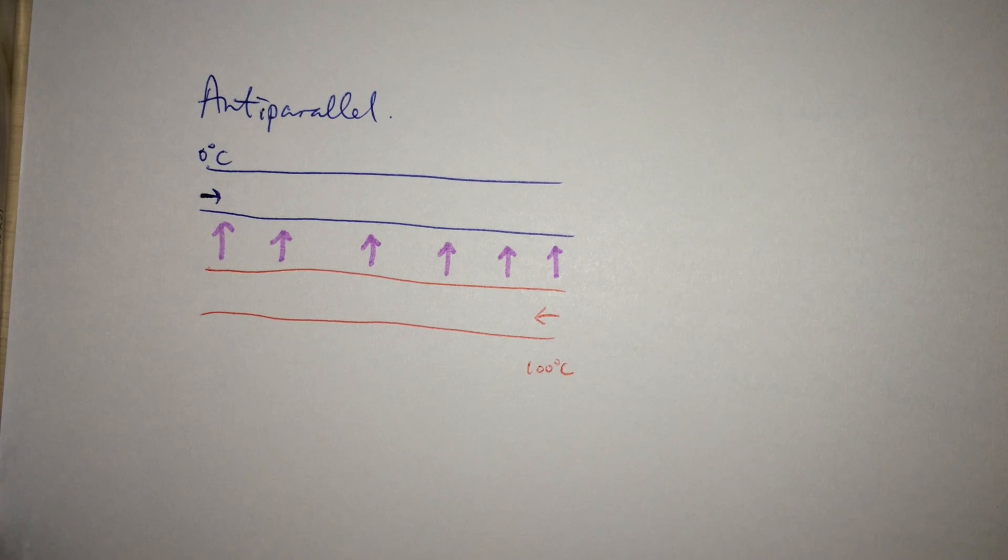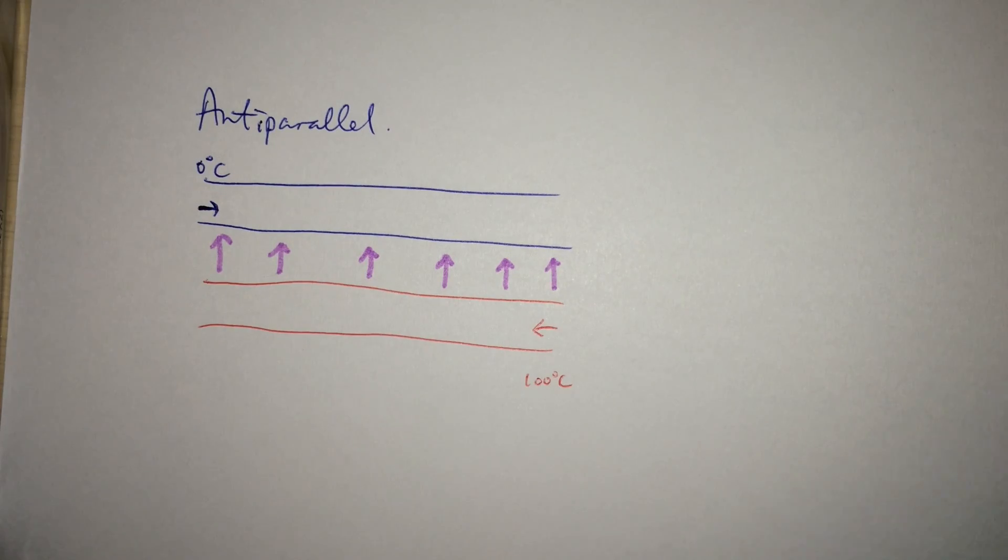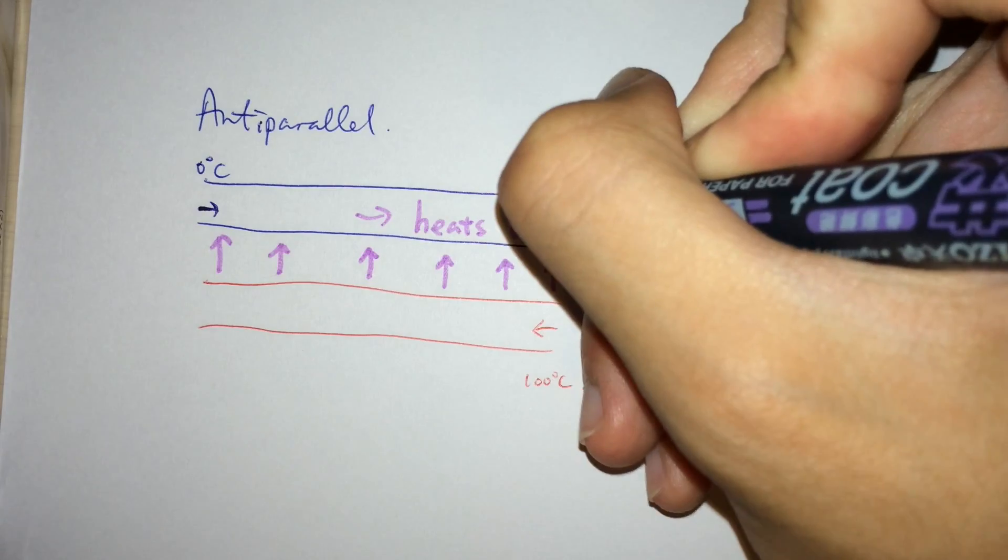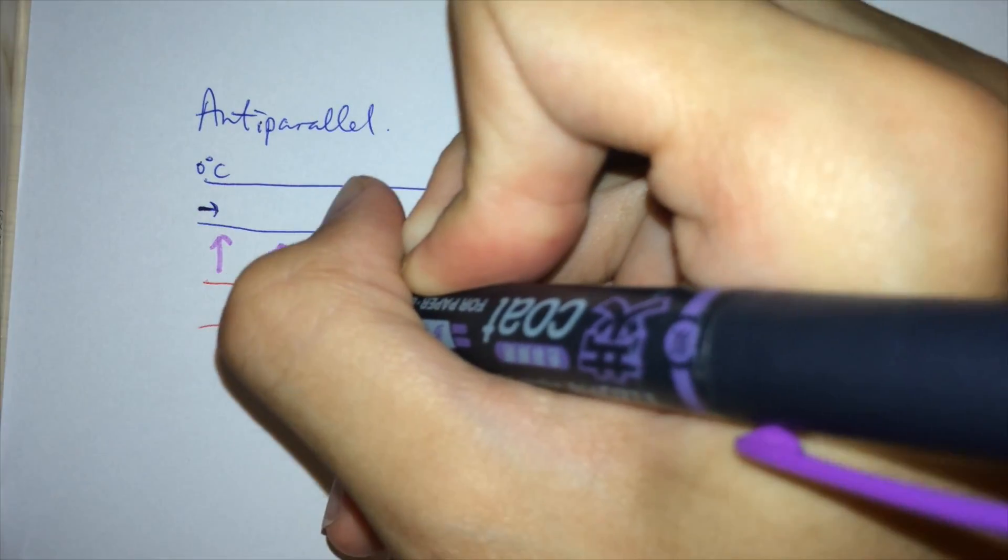As hotter water continuously gives off heat and cooler water continuously absorbs heat, both streams of water would have a hotter end and a cooler end respectively at the same side. Therefore, hotter liquid could always transfer heat down the heat gradient to the cooler tube.